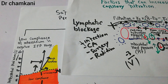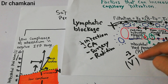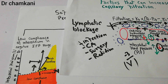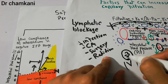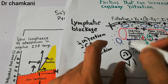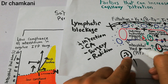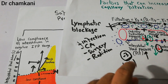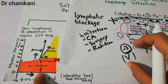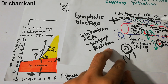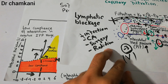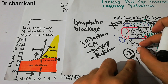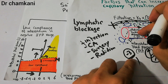This occurs because while the interstitial fluid pressure is in the negative zone, any increase in interstitial fluid volume increases this pressure, and that increased pressure opposes the movement of fluid out of the capillary. However, once the pressure enters the positive zone, further fluid accumulation in the interstitium causes no further increase in interstitial fluid pressure, so it can no longer prevent fluid movement from the capillary into the interstitium.